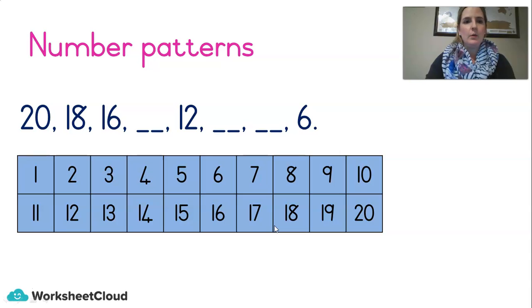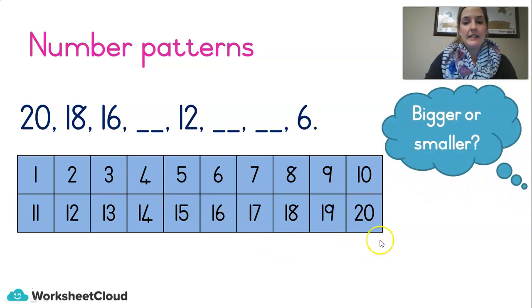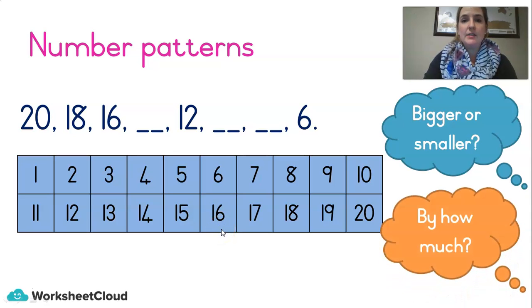Let's try another one. First question: are we getting bigger or smaller? 20, 18, 16 - that's smaller. We're getting smaller. By how much? 20, 1, 2, 18. 1, 2, 16. By 2 jumps. So we're getting smaller by 2 jumps. So let's go: 16 and 2 jumps smaller. 16, 1, 2, 14. 1, 2, 12 - we're on the right track. 1, 2, 10. 1, 2, 8. And if we were to jump 2, we'd get to 6. So we know we're right. That was another difficult one. Well done.